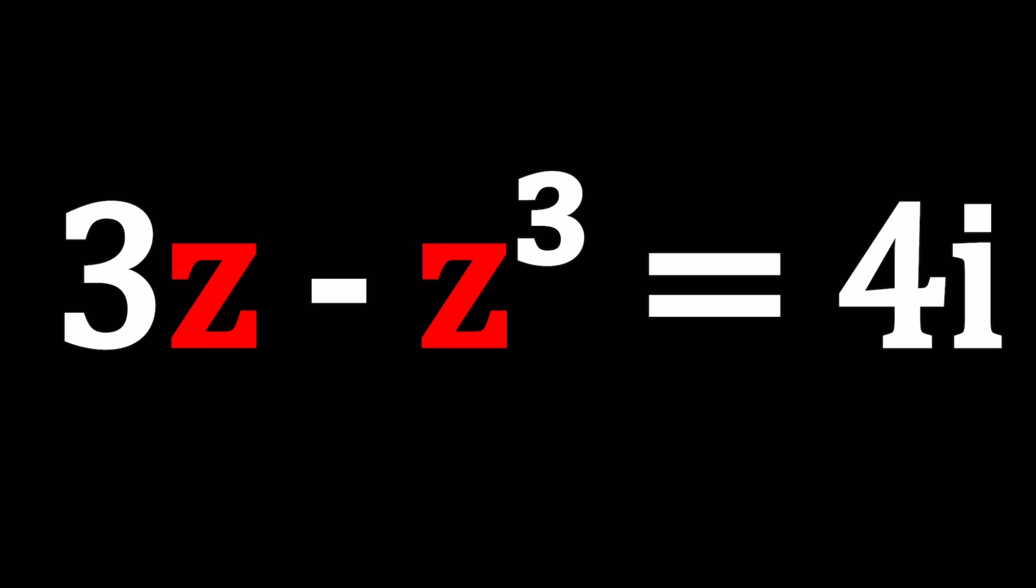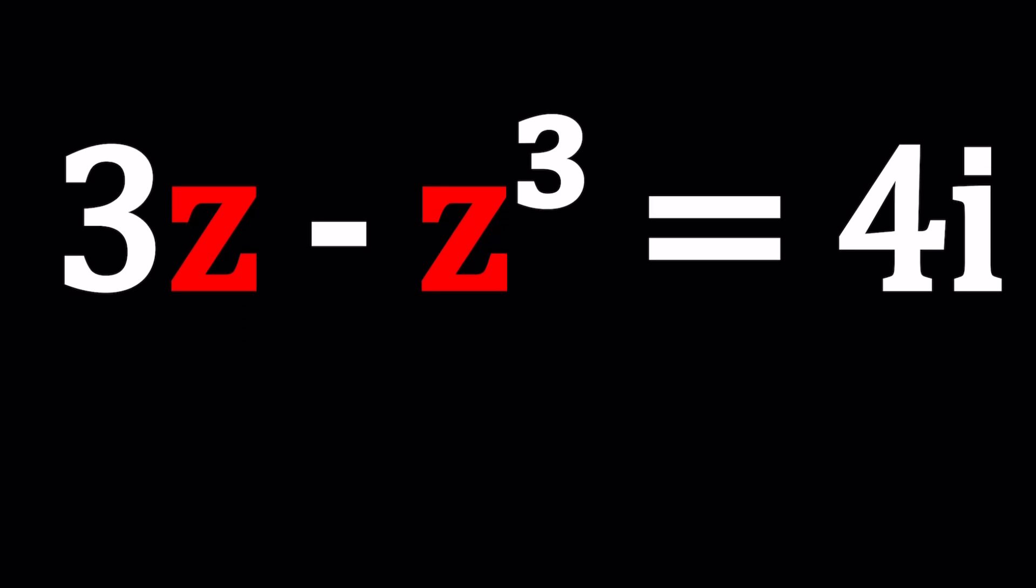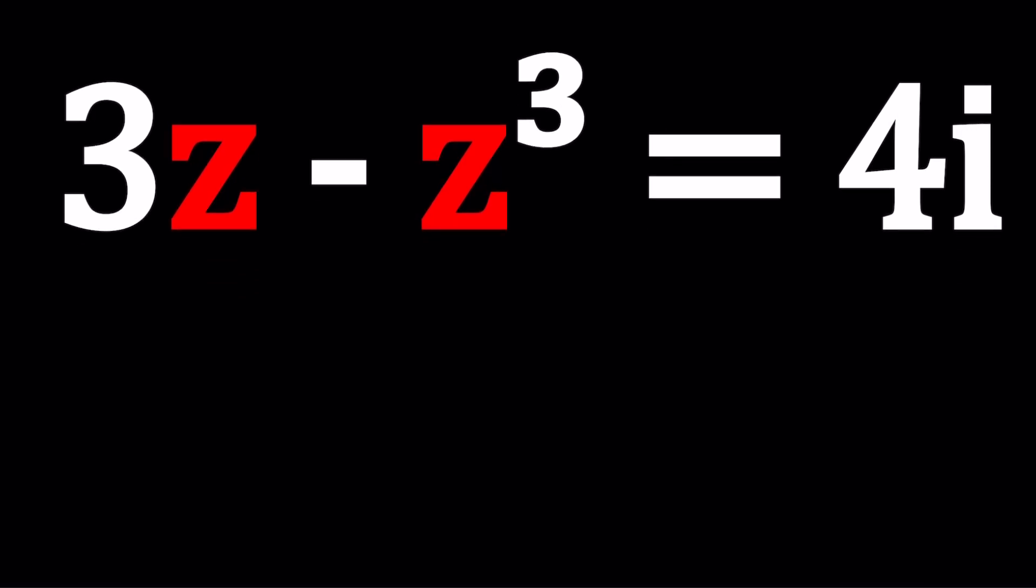And don't forget, complex solutions include real solutions because real numbers are just a subset of complex numbers, or complex numbers are kind of like an extension of real numbers by defining them in two dimensions and then looking at real numbers as a specific case where the imaginary part is zero on the real number line. So how do you solve this problem? I'll try to present more than one method.